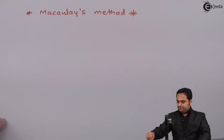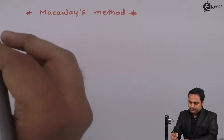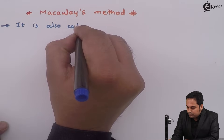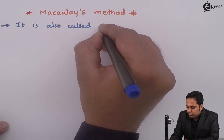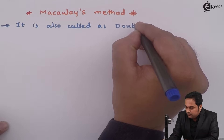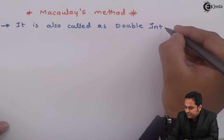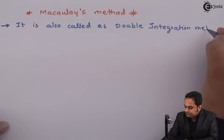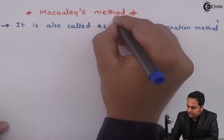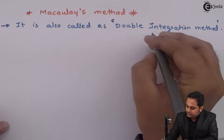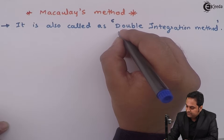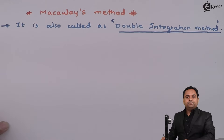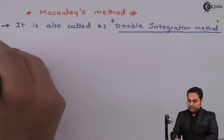Macaulay's method is also called the double integration method. This is the other name of Macaulay's method — it is also called the double integration method.